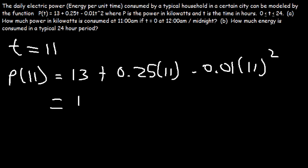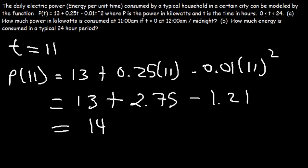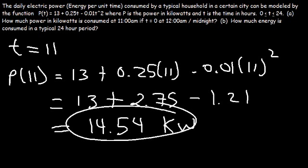So now let's do the math. 0.25 times 11 is about 2.75. 11 squared is 121 times 0.01, that's 1.21. So by 11 a.m., this particular household is consuming 14.54 kilowatts of power. One kilowatt is about a thousand watts, and one watt represents one joule per second. Joules is the unit of energy, but watts is the unit of power.